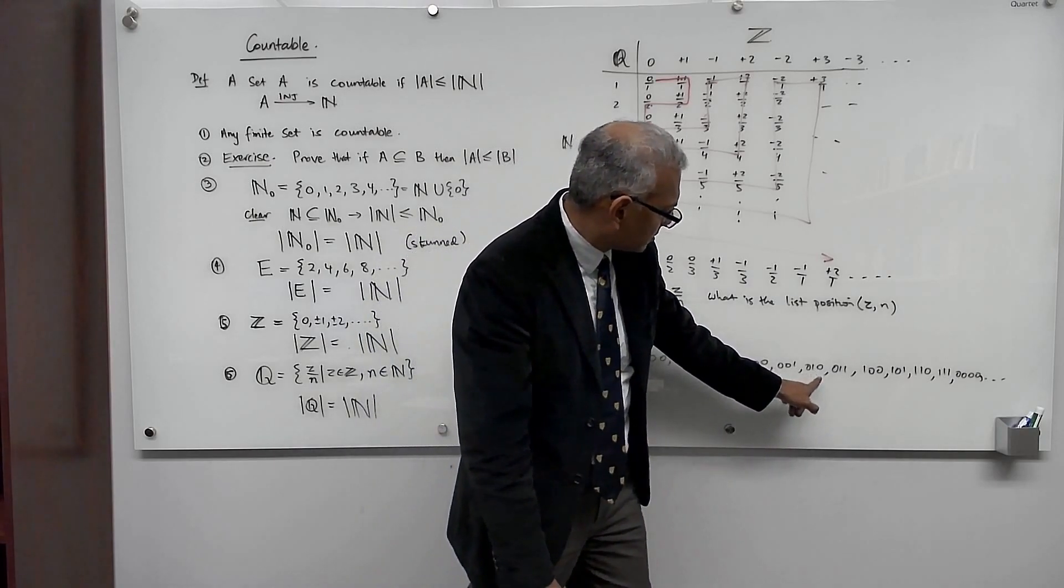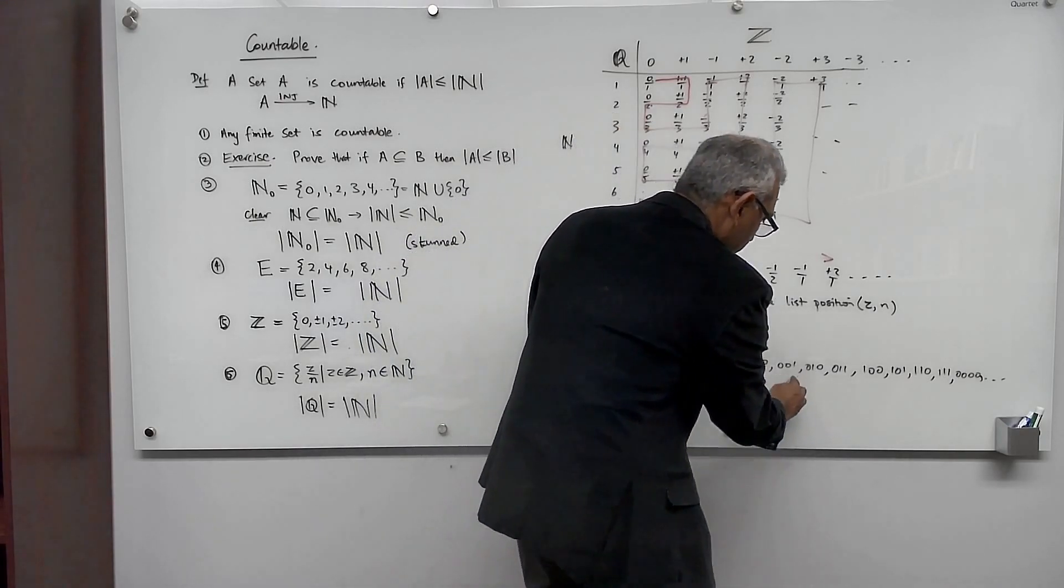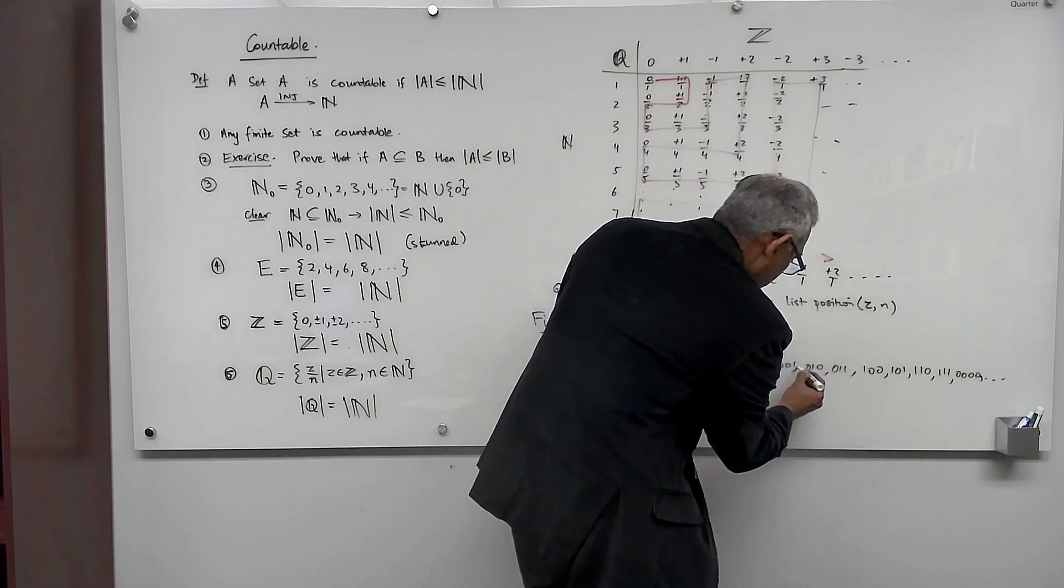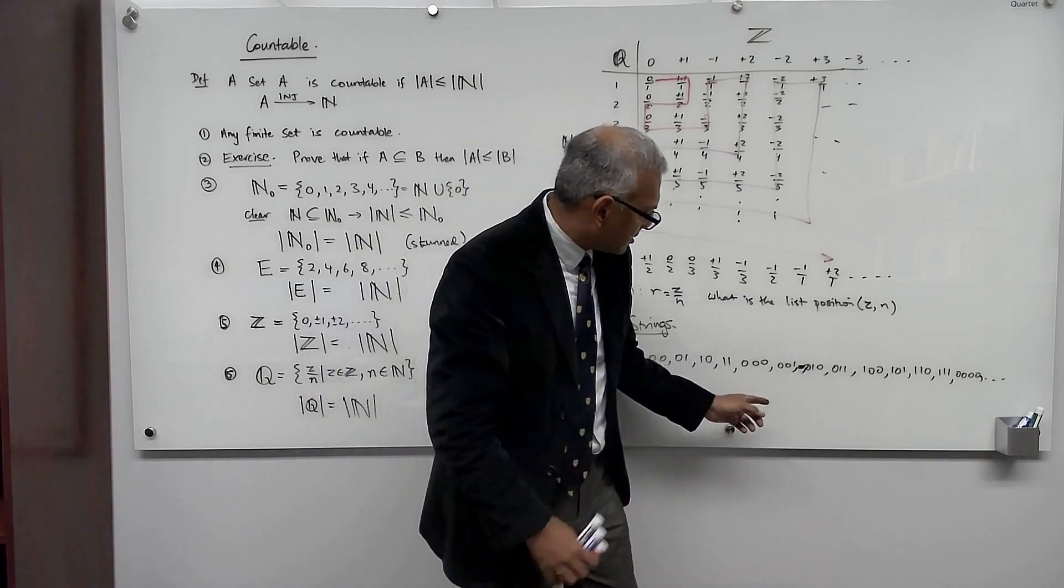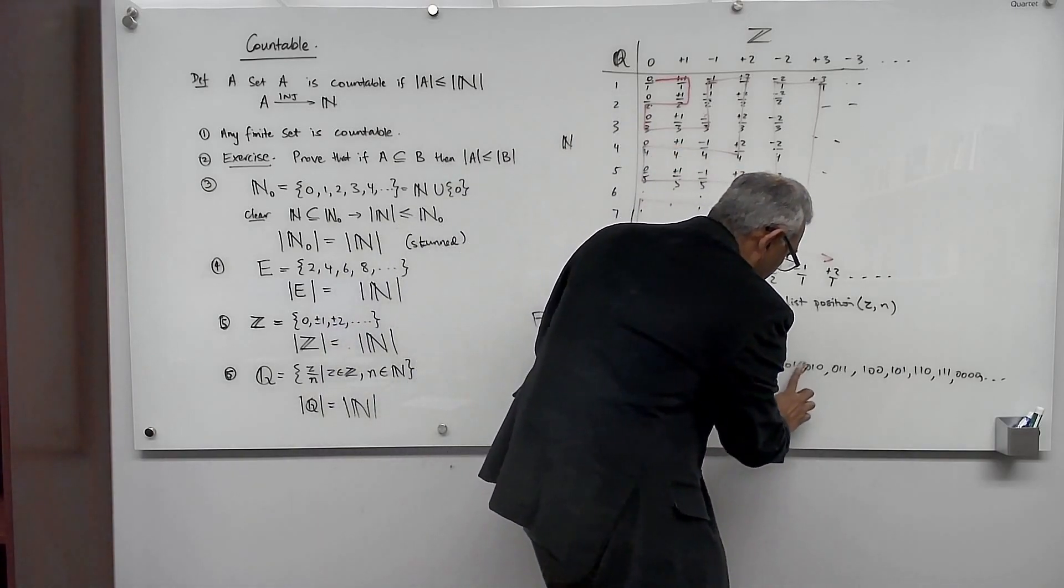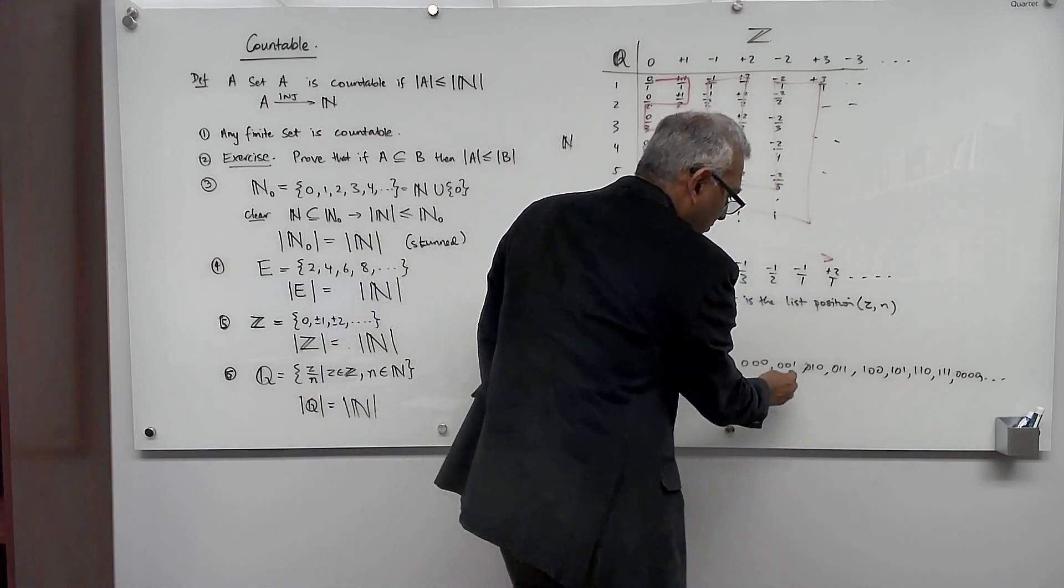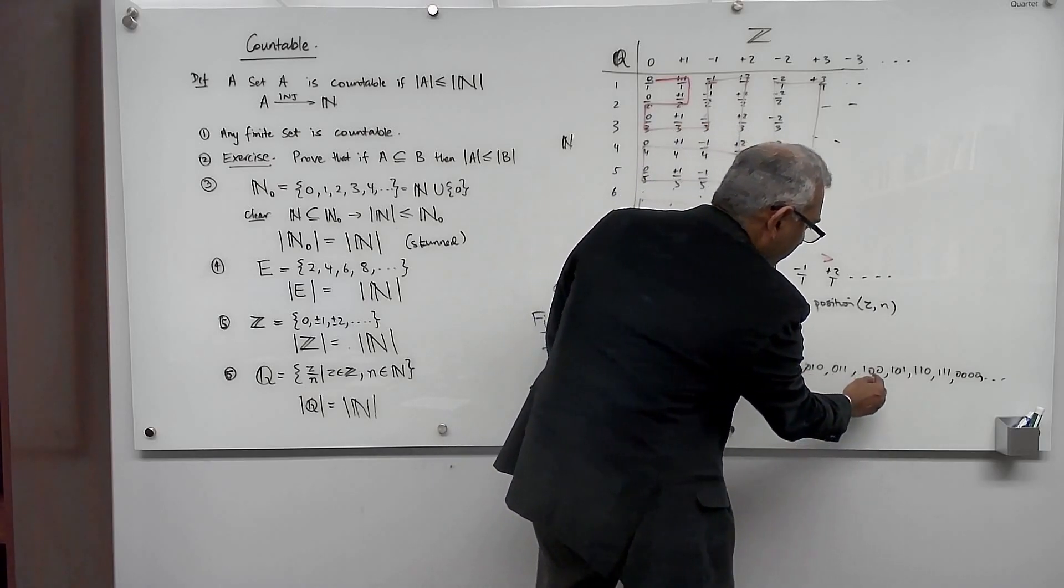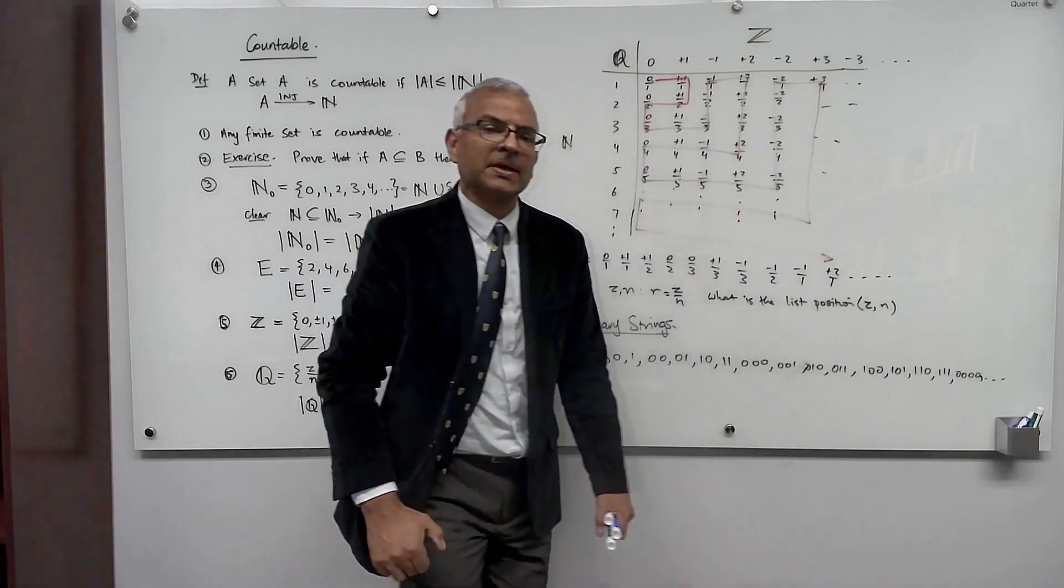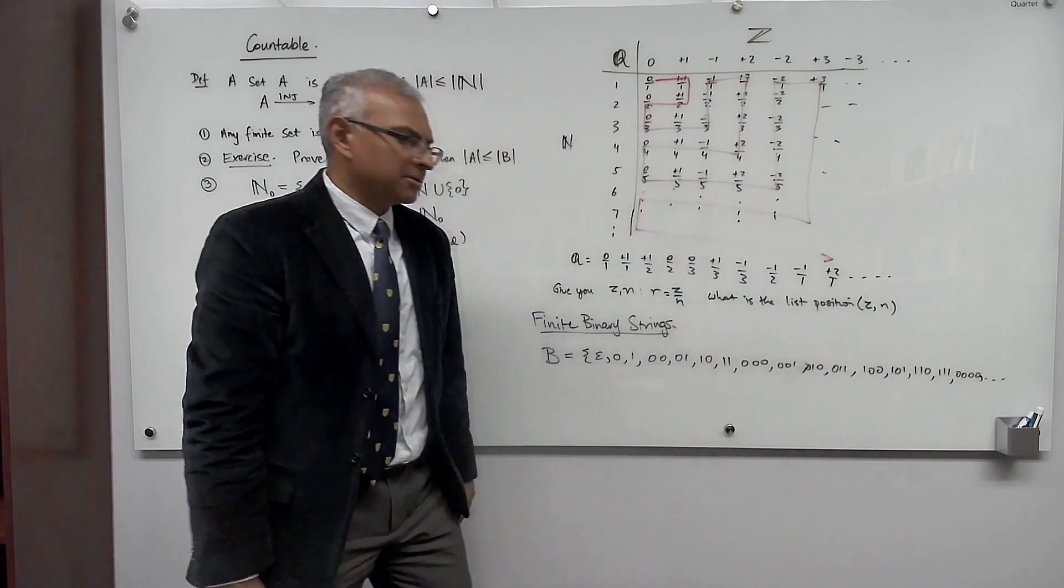0, 1, oh I left one out here. I left out 001. So now I have 0, 1, 2, 3, 0, 1, 2, 3, 4, 5, 6, 7. So those are the 8 length-3 binary strings.